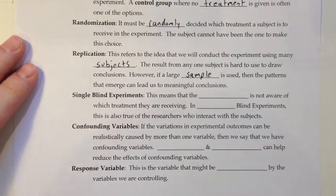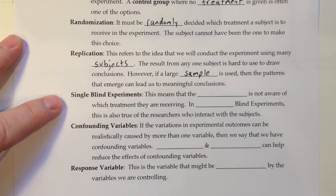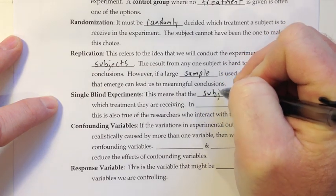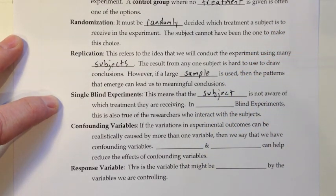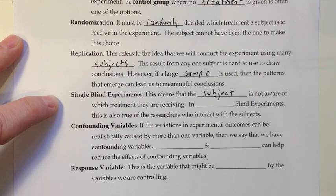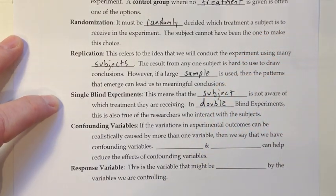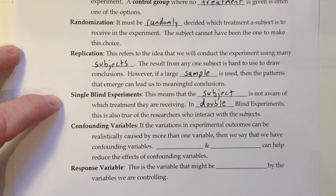Additionally, but not always, we like to have blinding in our designed experiments. One type is a single blind experiment, which means the subject is not aware of which treatment they are receiving — you wouldn't tell the person whether they were getting the placebo or the real medication. In double blind experiments, this is also true of the researchers who interact with the subjects, so the person interviewing and interacting with participants does not know which treatment they received, preventing bias.